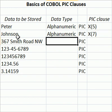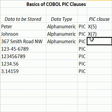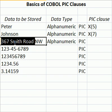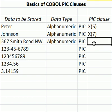This next data element might trip some people up. We see '367' is numeric, but we also have spaces and 'Smith Road Northwest.' Because we have numbers as well as spaces as well as alphabetic characters, that by default is also alphanumeric. Counting it up, it covers 17 bytes, so that would be PIC X(17).